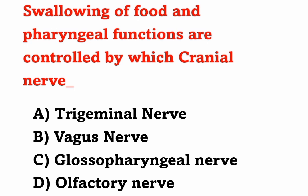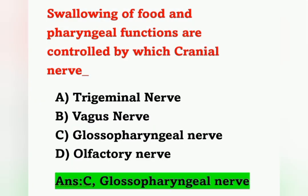Next question: Swallowing of food and pharyngeal functions are controlled by which cranial nerve? Options: A) Trigeminal nerve, B) Vagus nerve, C) Glossopharyngeal nerve, D) Olfactory nerve. Both swallowing and pharyngeal functions are controlled by the glossopharyngeal nerve. Option C is the correct answer.